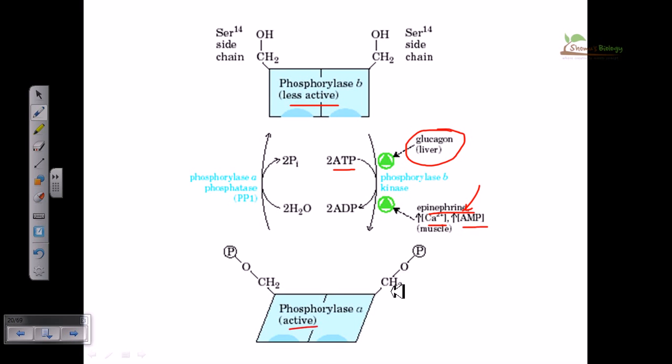In the more active form, the phosphorylated form of phosphorylase is much more active. Phosphorylase A can be restored back to its less active state by cleaving out the phosphate group. This cleaving out of phosphate group is established by another enzyme, controlling the regulation of this enzyme.